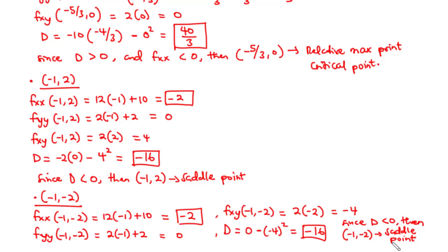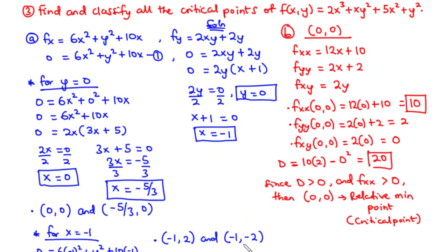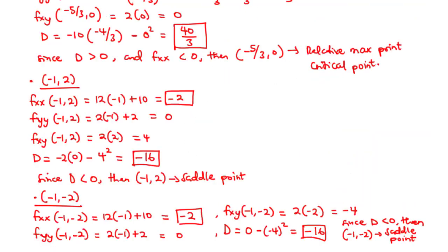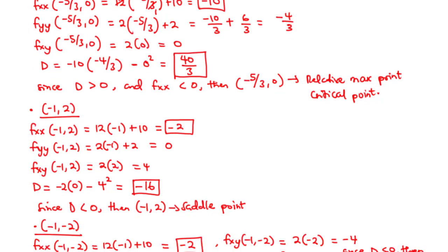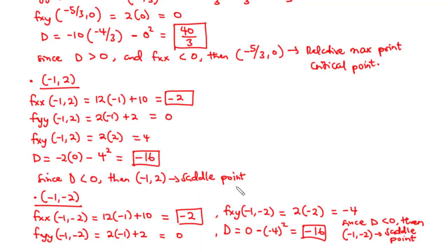In summary, we had 4 different points. The point (0, 0) is a relative minimum and critical point. The point (−5/3, 0) is a relative maximum and critical point. The last two points, (−1, 2) and (−1, −2), are both saddle points. Thanks for watching and see you in my next video.